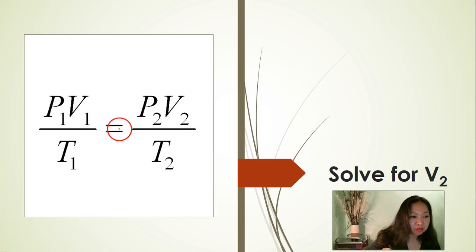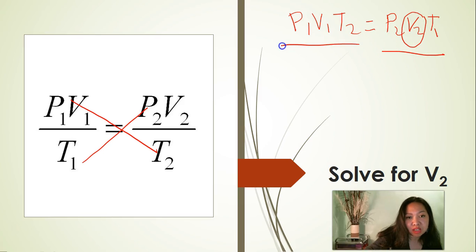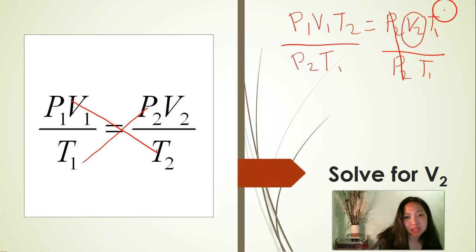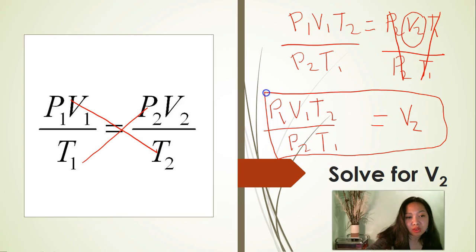Now solve for V2. Here's the combined gas law formula. We are going to cross multiply to get rid of the denominators. P1 times V1 times T2 is equal to P2 times V2 times T1. V2 is right here, so I'm going to circle that. Divide both sides of the equation by P2 times T1 to isolate V2. Cancel P2, cancel T1. So V2, which is the final volume, is equal to P1 times V1 times T2 divided by P2 times T1.